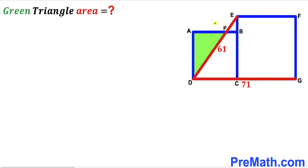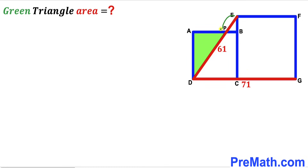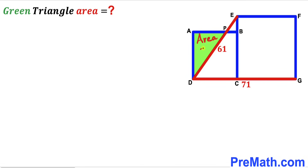Welcome to pre-math. In this video we have got two blue squares: the smaller square ABCD and the larger square EFGC put together as shown in the diagram, such that the horizontal segment DG has length 71 units and the diagonal ED has length 61 units. As a result we end up with a green shaded triangle DAP, and our task is to calculate the area of this green shaded triangle.